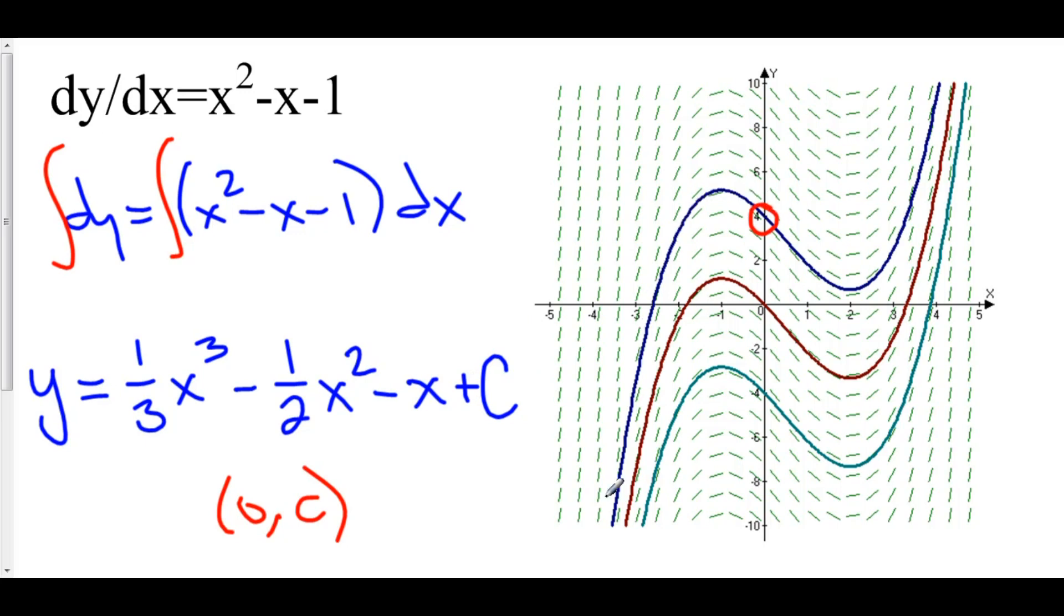If C = 0, you would get this red line in the middle. And if C equals, for example, -4, then you would fall along this turquoise line on the bottom. But as you can see, there are an infinite number of possibilities.